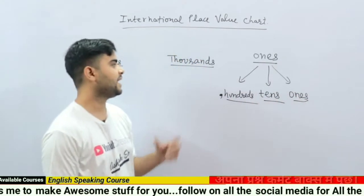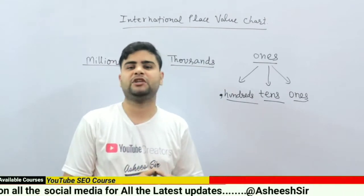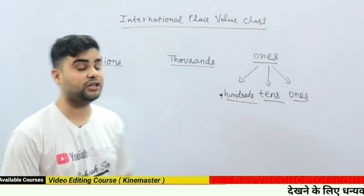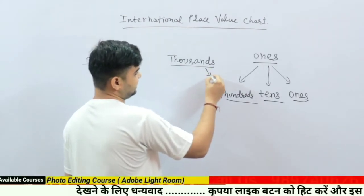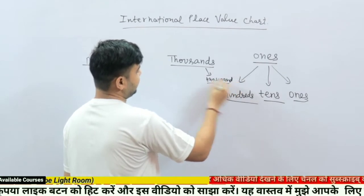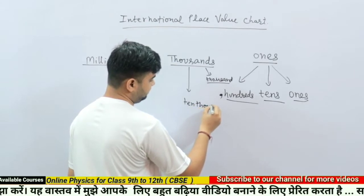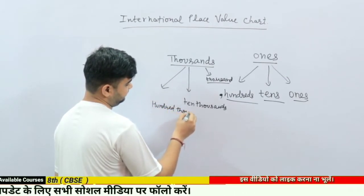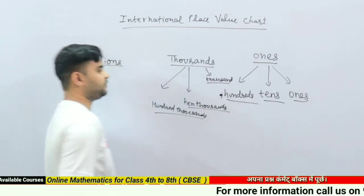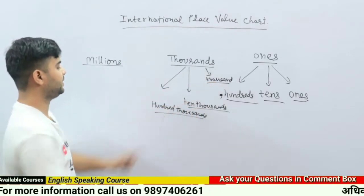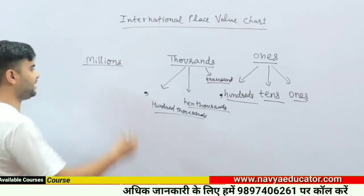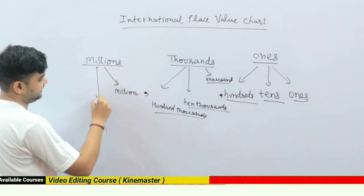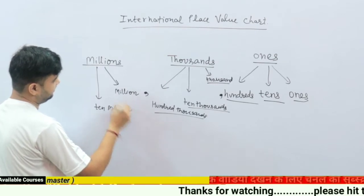After three digits we make a comma. Now talking about thousands: in the Indian place value chart we have ten thousand and ten thousand thousand, but in the international place value chart we have three kinds of thousands — first is thousands, second is ten thousands, and third is hundred thousands. Similarly, millions also have three parts: million, ten million, and hundred million.